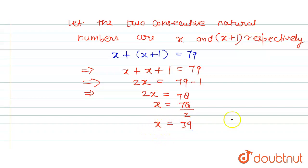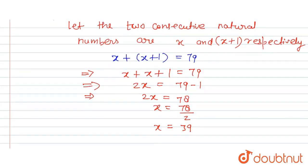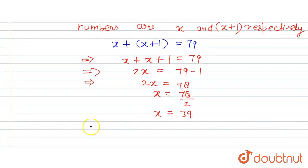So that means the first number is 39, and the other number will be x plus one. We are considering, so x is 39 plus one, so this is 40.